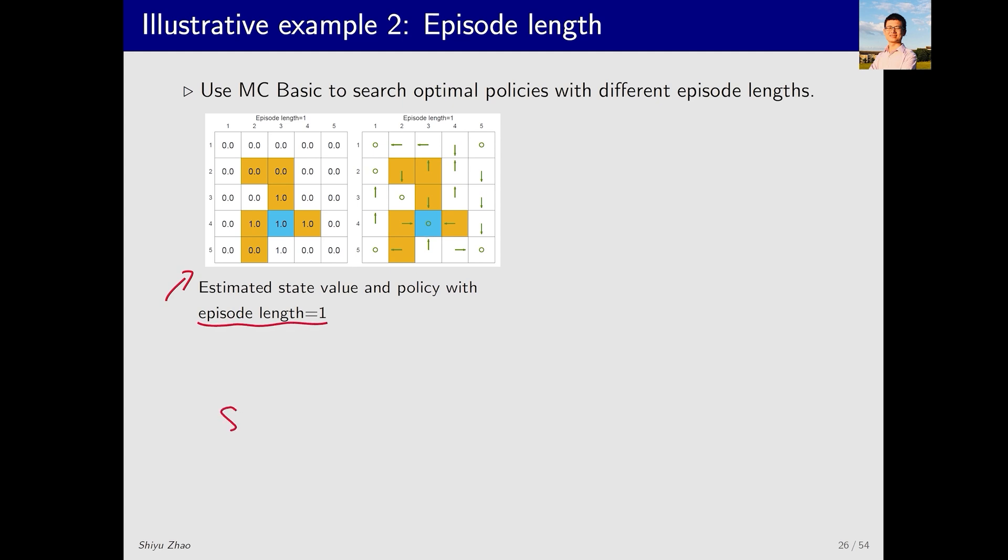What does this mean? It means that starting from state S, taking action A, it then jumps to a new state to receive a reward, and then jumps again to another state for another reward. However, an episode length of 1 means that it stops after this single transition, and no further actions are taken. Thus, only the reward obtained at this single step is used as the episode's return, which obviously is an inaccurate estimate of the action value. Now, let's pay attention to its properties. As you can see, only the states immediately adjacent to the target have positive values, and their corresponding policies are correct. All other values are zero, and their policies are not optimal. A value of zero implies that these states never reach the target.